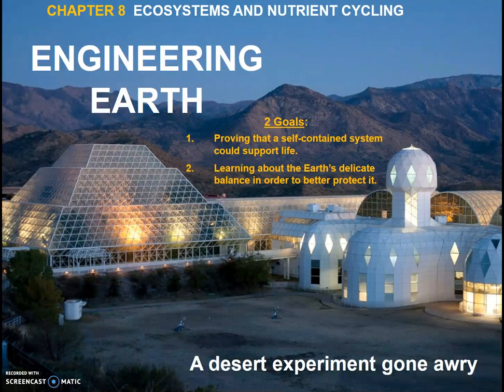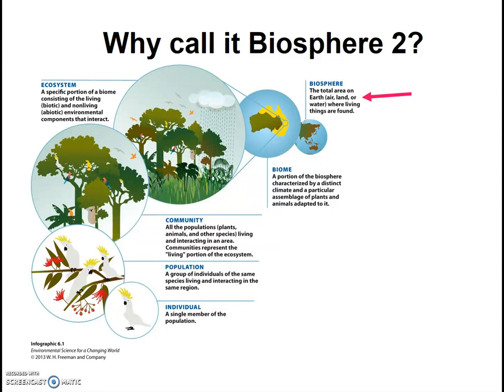Notably, they also learned that we better take care of the Earth, as we have really no ability to recreate it. So what's in a name? Why call it Biosphere 2? Biosphere is defined as the area of the Earth's system where life is found. Thus, they took the name Biosphere 2 as they were trying to mimic the Earth by creating another livable space, closed off from the Earth.